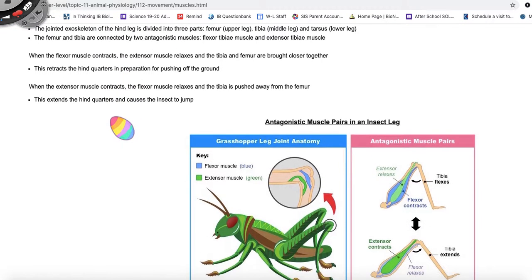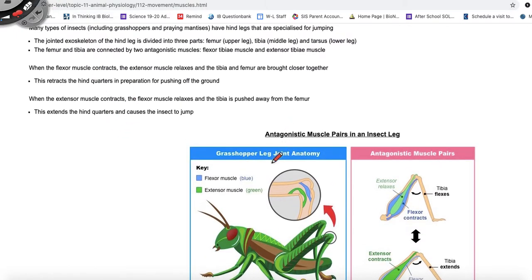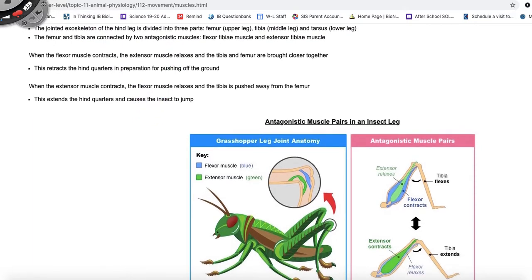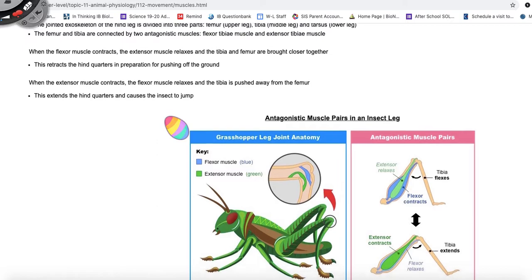So let's look at the anatomy here of a grasshopper. So here we see the leg of a grasshopper. And we know that grasshoppers have an exoskeleton. And we know that the leg is divided into three parts. So we have the femur, which is this part right here, which is the upper leg. And then we have the tibia, which is the middle leg right here. And then we have the tarsus, which is this part right here, which is the lower leg. The femur and the tibia are connected by two antagonistic muscles. And these are called the flexor tibia muscle, and it's shown here in blue, and the extensor tibia muscle. And that's shown here in green. So that's what connects the femur to the tibia of this insect.